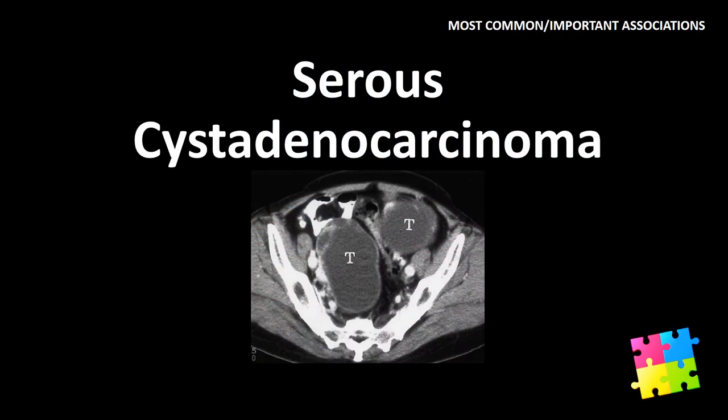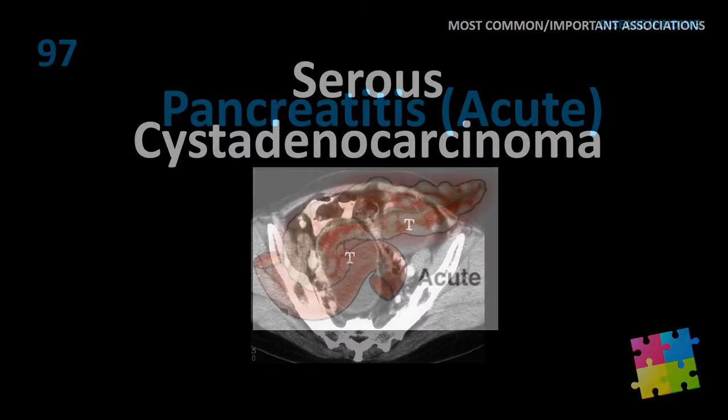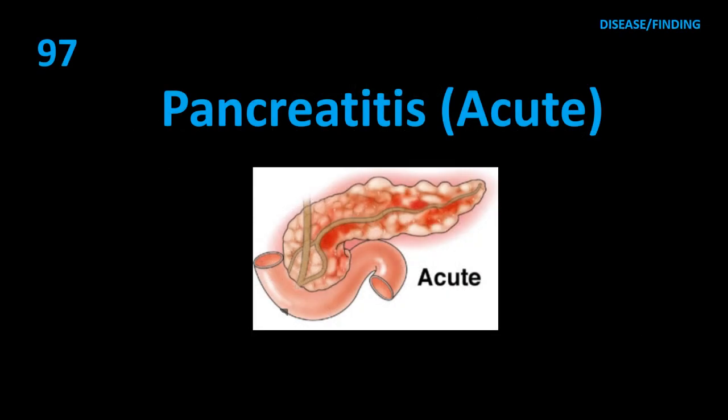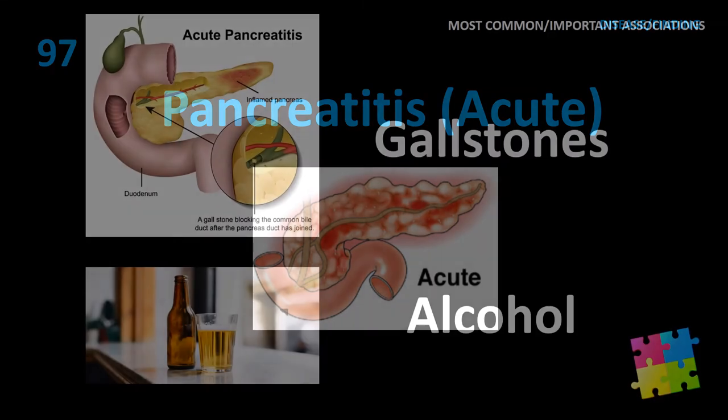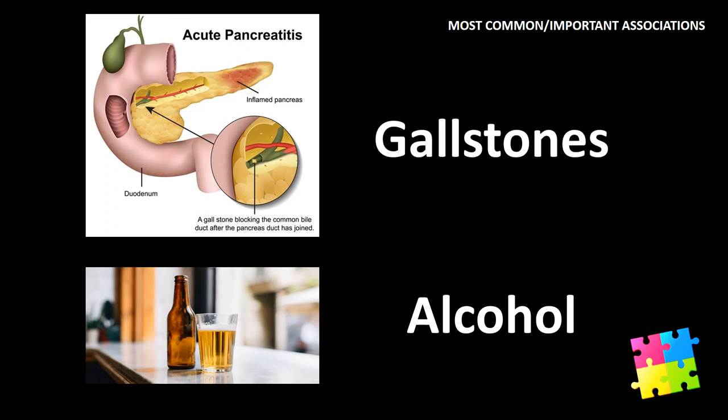Item 97: Acute pancreatitis — gallstones and alcohol.